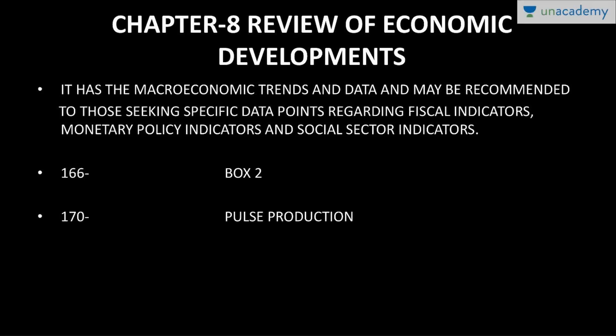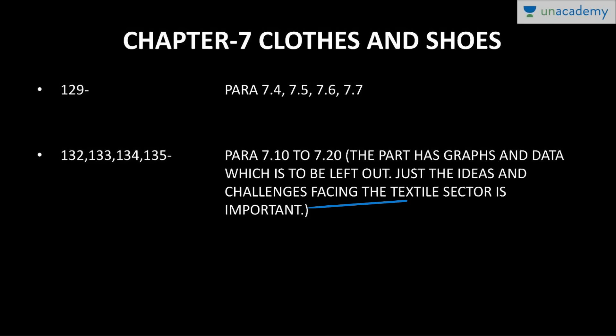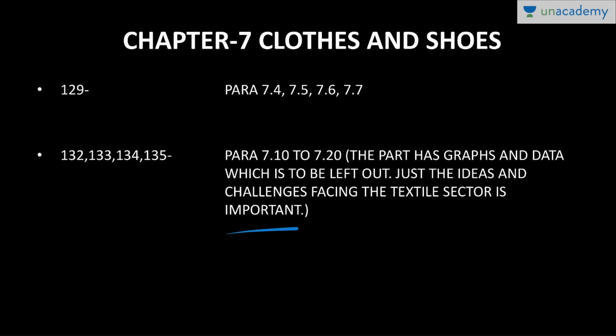For chapter seven, read paragraphs 7.4, 7.5, 7.6, and 7.7. Then pages 132-135, paragraphs 7.10 to 7.20. This section has graphs and data which can be left out — just focus on the ideas and challenges facing the textile sector. That is the important point.